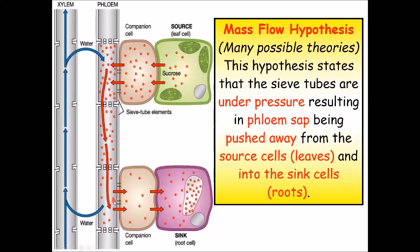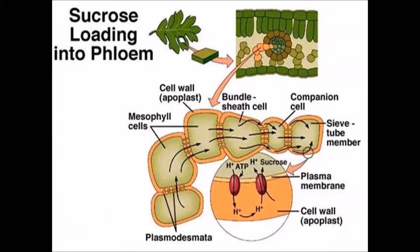So it all starts in the leaf, photosynthesis occurs and sucrose, well glucose is made which is then converted into sucrose, which then has to be moved into the root.